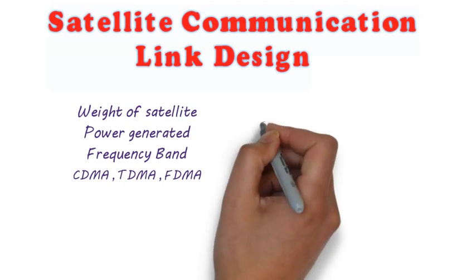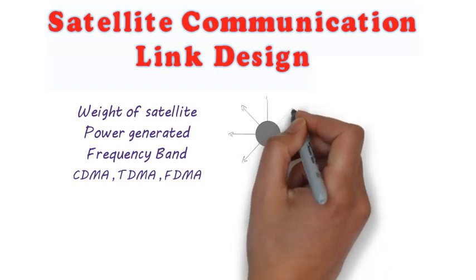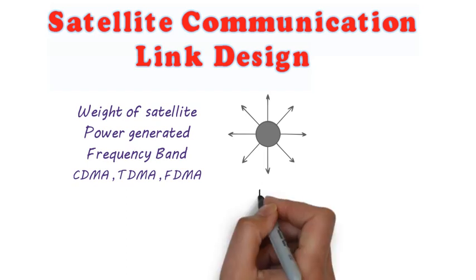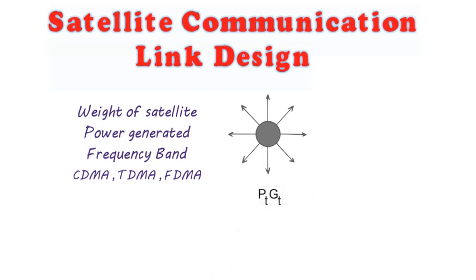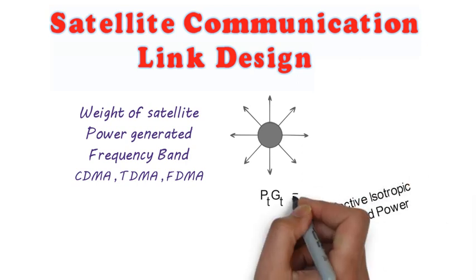Let us consider a transmitting source is radiating a total power of PT watts uniformly in all directions and it has antenna gain of GT. Then the product of PT and GT is called effective isotropic radiated power, or in short, EIRP.